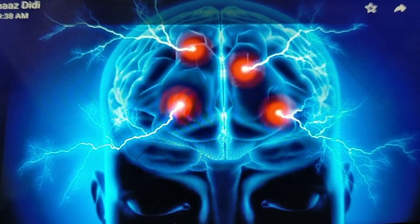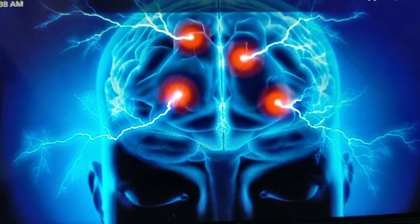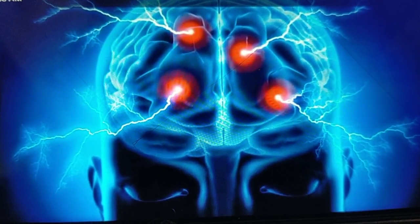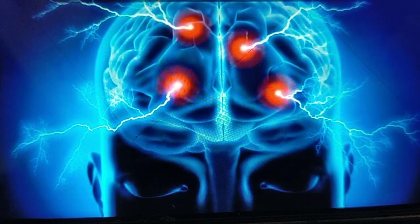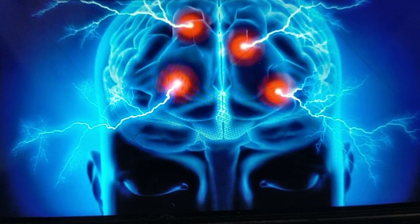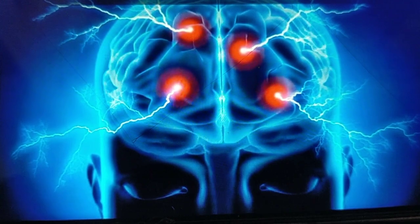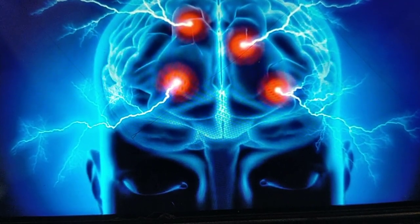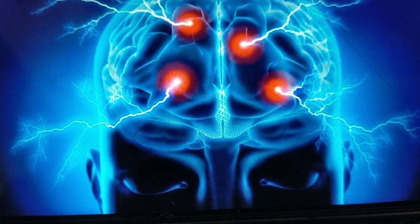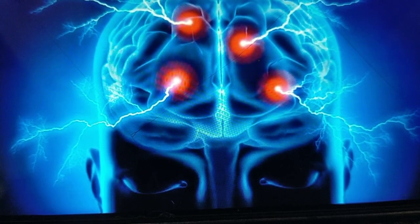Now let's understand what exactly happens during a seizure in the brain — in other words, the pathophysiology of seizures. Our brain, the control center of the human body, has billions of cells called neurons. All these cells connect to each other to create an electrical network, which connects the different parts of the brain. A seizure happens when neurons malfunction and electrical signals fire uncontrollably. The more neurons affected, the more intense and widespread the seizure will be, with greater bodily effects.